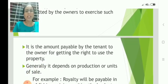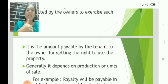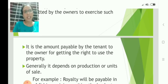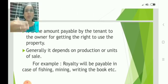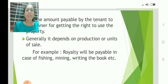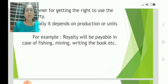The first party is the owner of the property — the landlord or lessor. The second party is the one who receives the right to use the property — that is the lessee. Examples where royalty applies include mining, fishing, and writing a book.